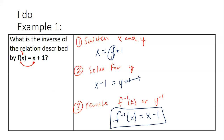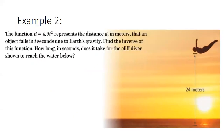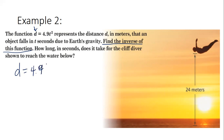To summarize: we switch x and y, solve for y, then rewrite. Now let's do the word problem. The function d = 4.9t² represents the distance d in meters that an object falls in t seconds due to Earth's gravity. We need to find the inverse of this function, then use it to find how long it takes a cliff diver to reach the water.